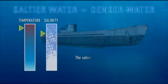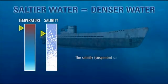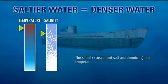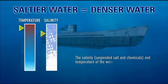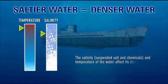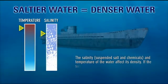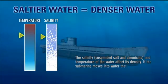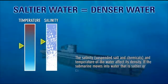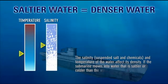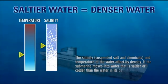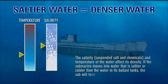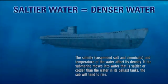The salinity, suspended salt and chemicals, and temperature of the water affect its density. If the submarine moves into water that is saltier or colder than the water in its ballast tanks, the sub will tend to rise.